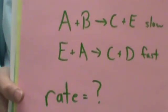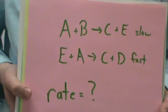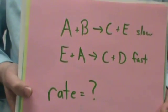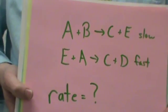What would the rate equal? The rate would be equal to K times the constant times the concentration of A times the concentration of B.